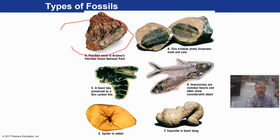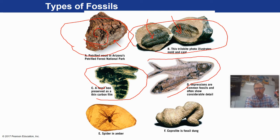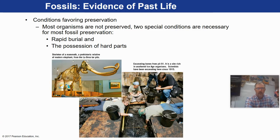Here are some examples: petrified wood is silicified wood — wood is mostly carbon, nitrogen, oxygen, and hydrogen, but some of that got replaced with silica making it hard. We call it fossilized or petrified wood and you can find it all over, including out in the badlands. Here's an example of a trilobite mold and cast. Here's a carbonized fossilized bee — notice it's kind of black and coaley looking. Here's a piece of amber with a spider fossilized inside it, and of course fossilized poop — a coprolite.